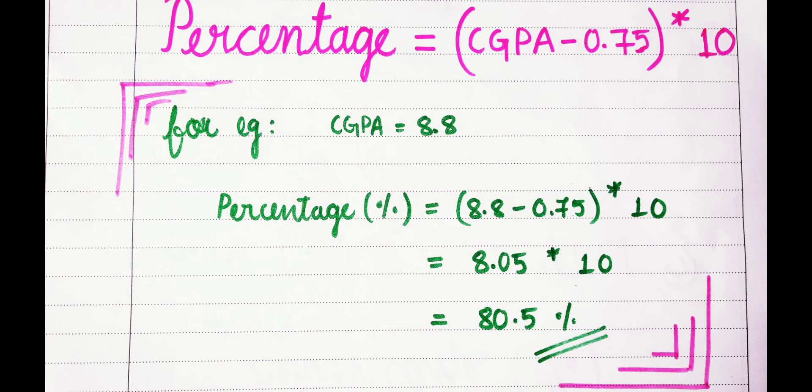To convert it into percentage, we subtract 0.75 from 8.8, that will become 8.05, and then we'll multiply it by 10. That becomes 80.5 percentage. Hope you understood how to calculate percentage from CGPA.